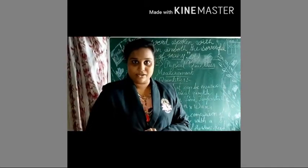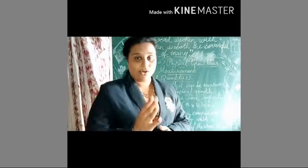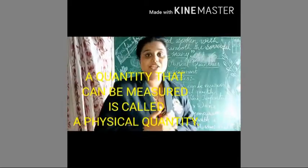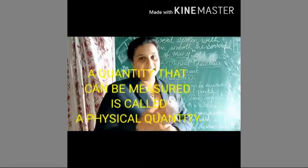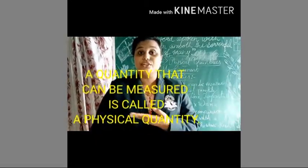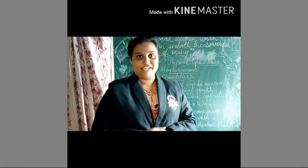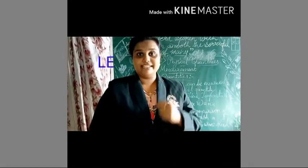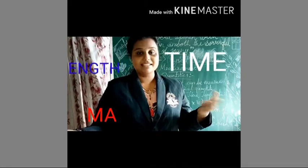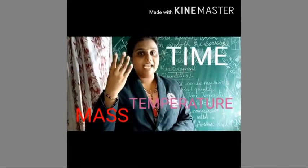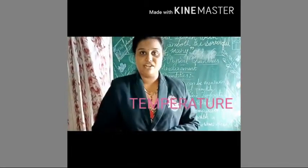Now, what is a physical quantity? Those quantities that can be measured are called a physical quantity. For example, length, time, mass, and temperature — they are the four most basic physical quantities.